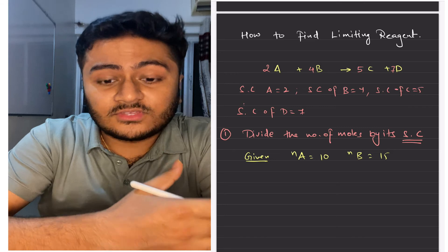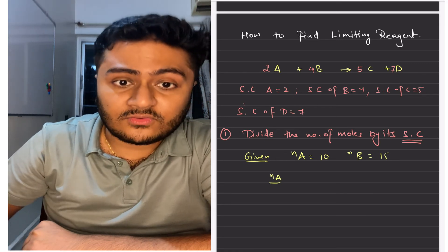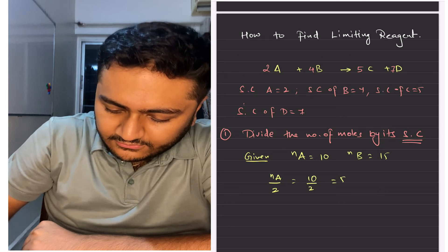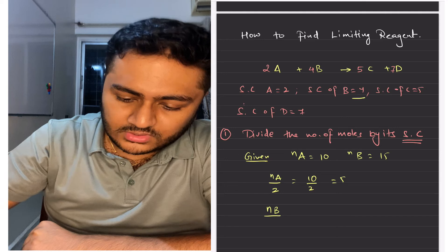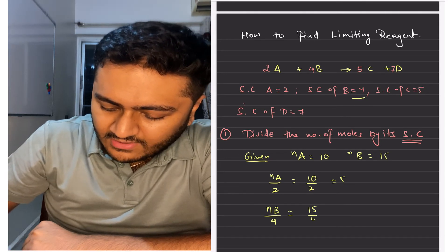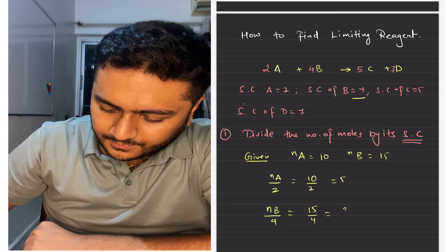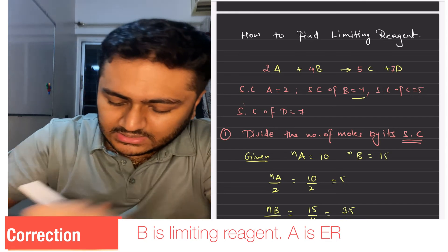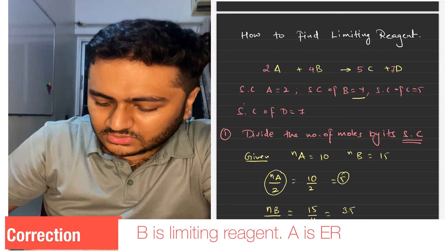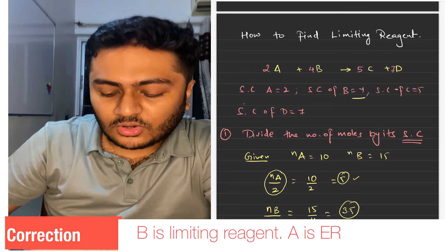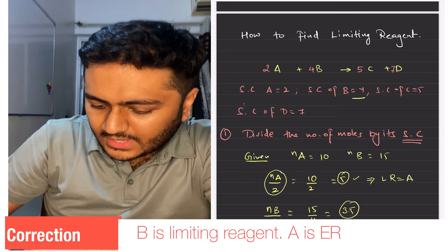We are asked which of A or B will be the limiting reagent. We divide moles of A by its stoichiometric coefficient: 10 divided by 2 equals 5. Then we take B's moles and divide by its stoichiometric coefficient: 15 divided by 4. Between these two, we can clearly see that 5 is smaller, therefore the limiting reagent will be A and the excess reagent will be B.